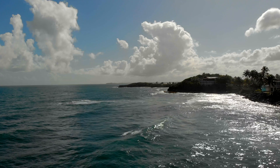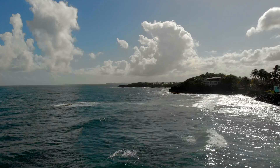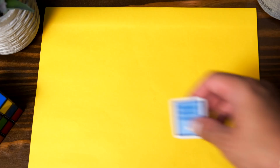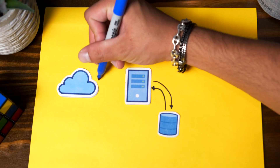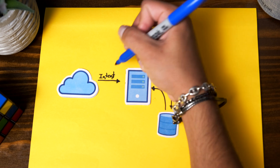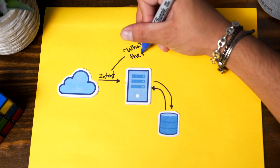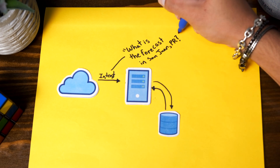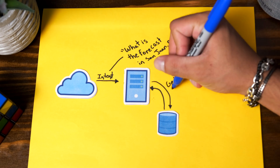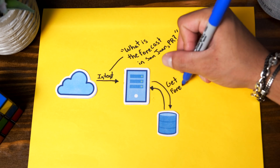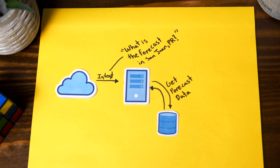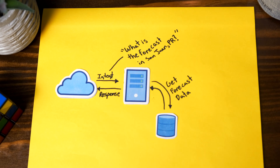So for this specific project, to make this surf forecasting thing work, what I would have to do is create a web server that listens for a specific intent where the user is asking for the forecast in a specific region in Puerto Rico, which is where I live. The server then goes to look for that data from an external data source, processes it, and then sends back a response detailing whatever the Alexa speaker should say.